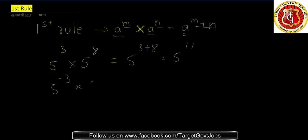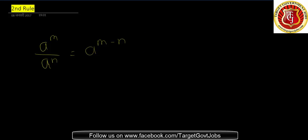If something is negative and something is positive, we can easily do 5 raised to minus 3 into 5 raised to 8, which equals 5 raised to minus 3 plus 8, which is 5 raised to 5. We have a separate rule for negatives — we'll cover that in the next rule.